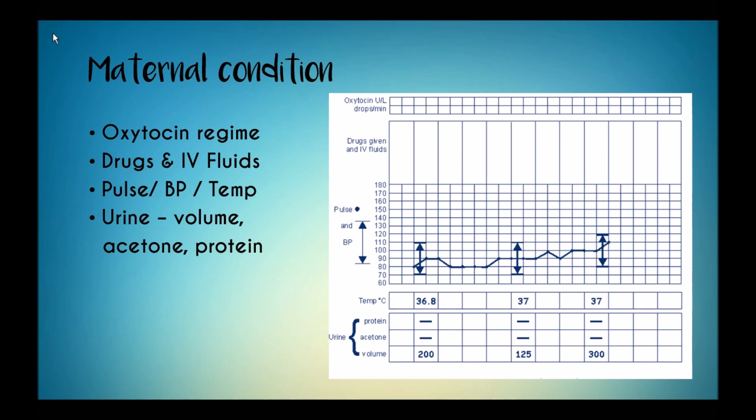In the last component, which is the maternal condition, you record the oxytocin regime used, drugs and IV fluids that are administered, pulse, BP, and temperature of the mother. You also record urine volume and urinary concentration of acetone and protein.